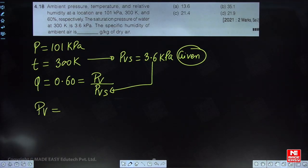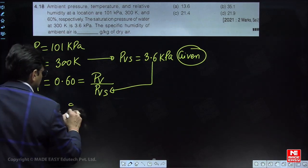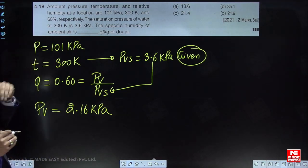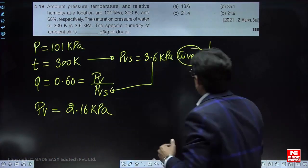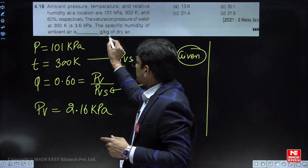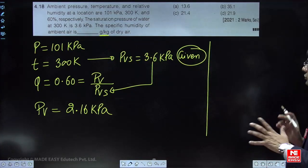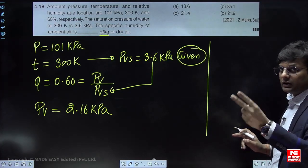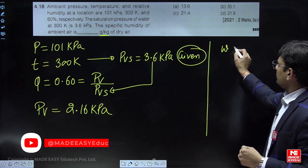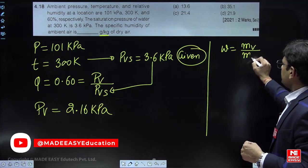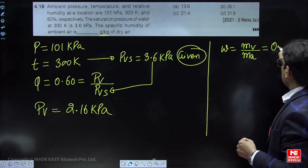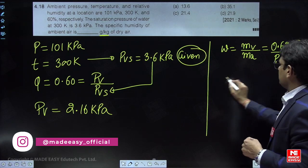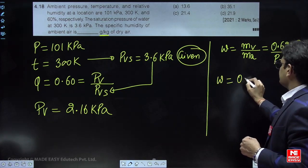The specific humidity of the ambient air - but remember, see the units carefully: gram per kg. This question was asked for two marks in GATE 2021. What is specific humidity? Mass of water vapor per kg of dry air, or 0.622 PV upon P minus PV.